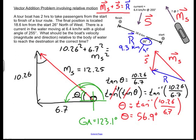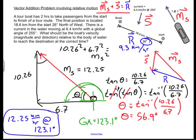So my very final answer. What is the total thing? I am going to say it is 12.25 km per hour. That is the magnitude. And my vector is at a global angle of 123.1 degrees. So there is the full thing.